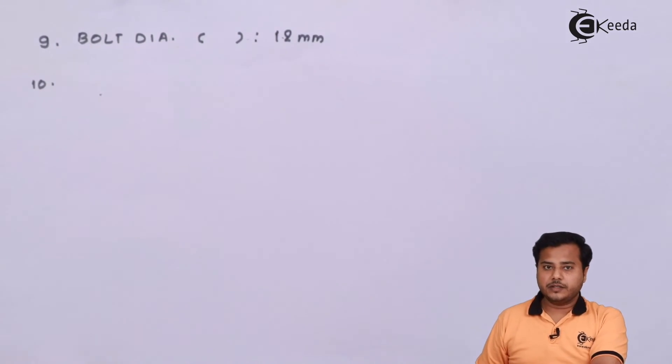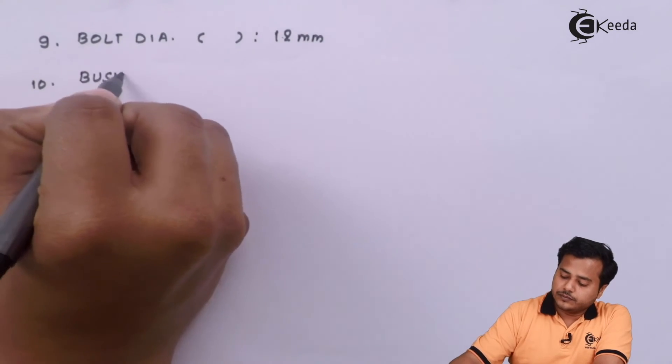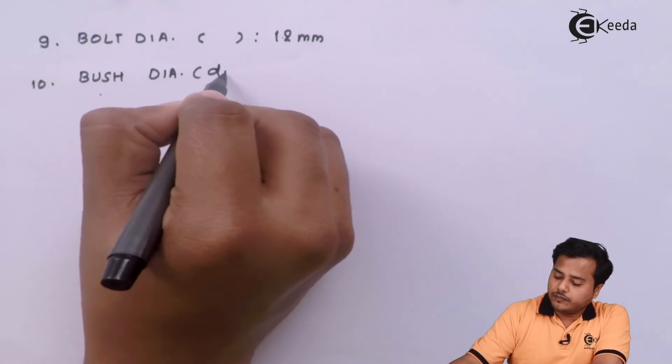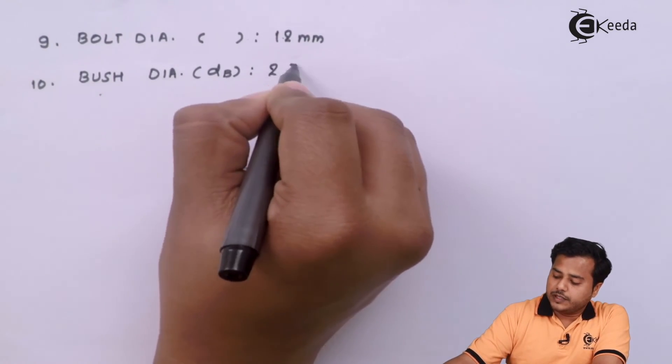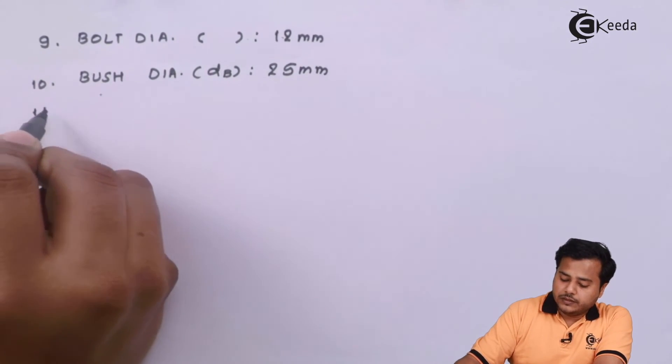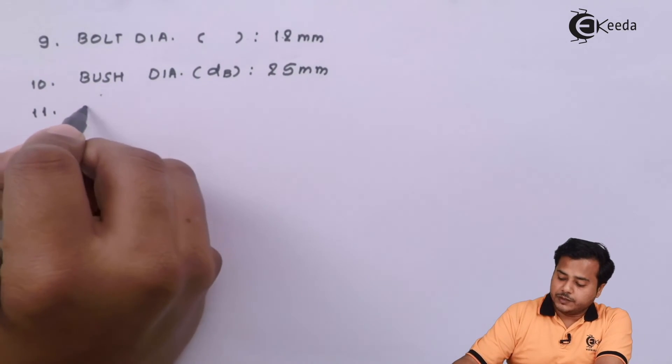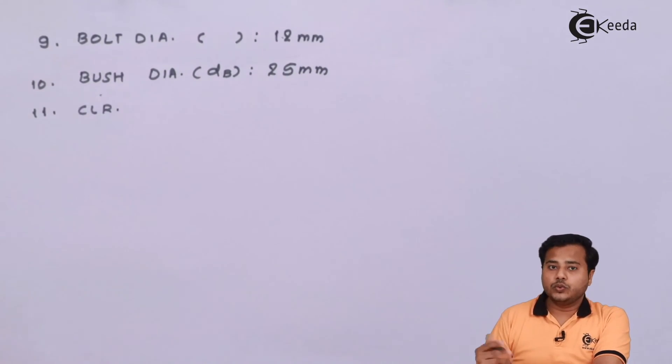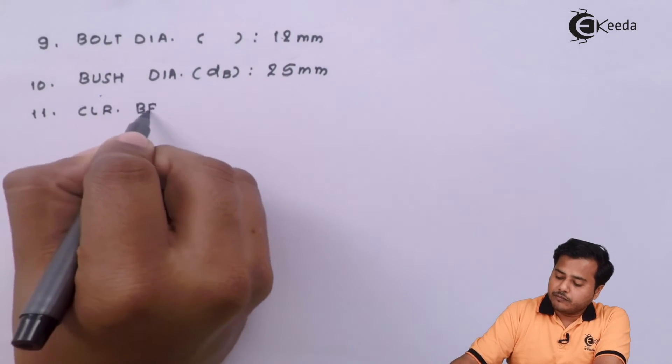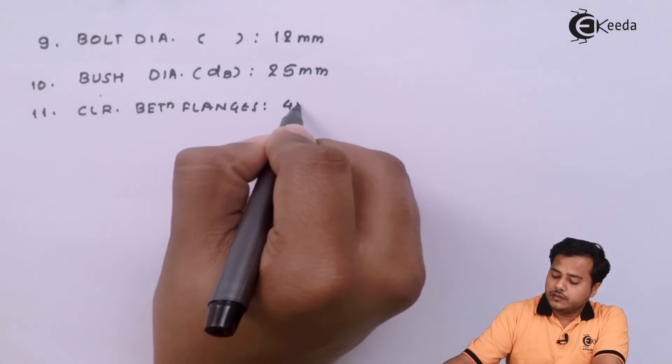The 10th parameter is the bush diameter which in our case is 25 millimeter. The 11th one and of course the last one is the clearance between two flanges, let's say is 4 millimeter.